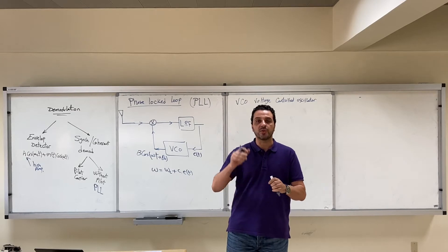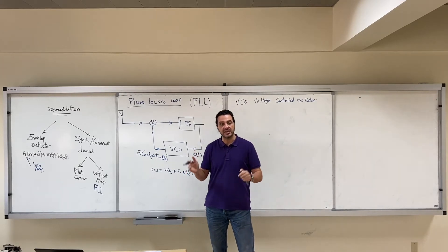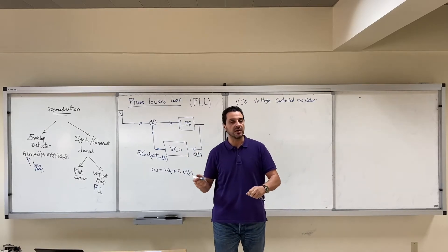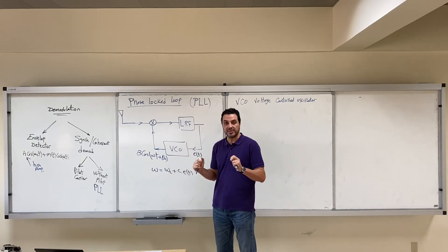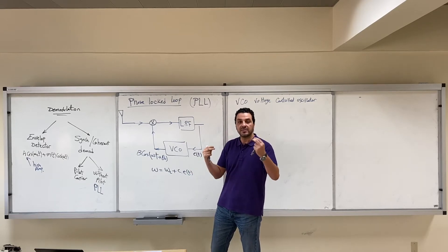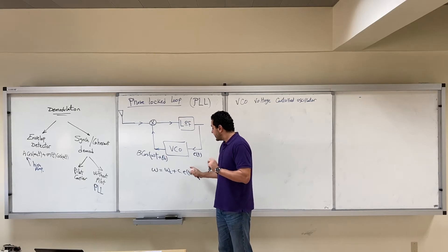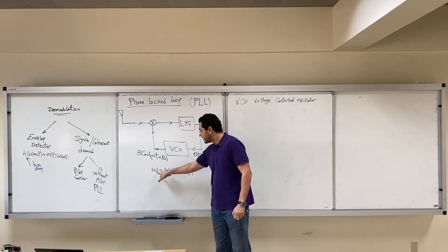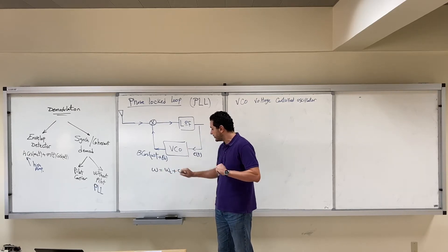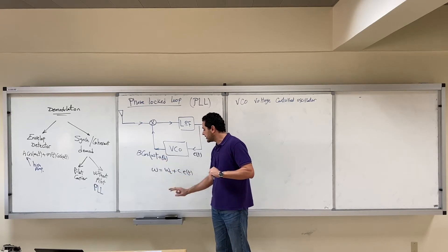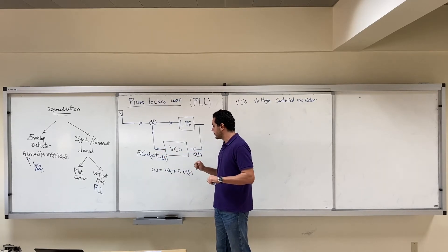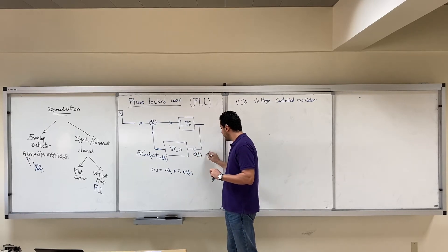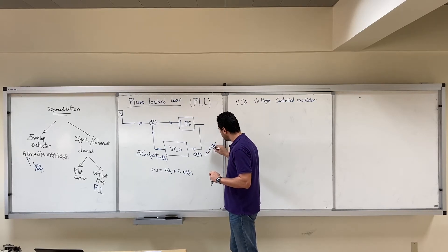The transmitter and receiver agree on a certain carrier frequency — for example 1000 kHz, 90 MHz, or 88 MHz. So ωc is the default carrier frequency agreed between transmitter and receiver. If E(t) is positive, the VCO frequency increases above ωc; if E(t) is negative, the frequency goes below ωc. The frequency of the VCO output is controlled by this signal, which we will later call the error signal.